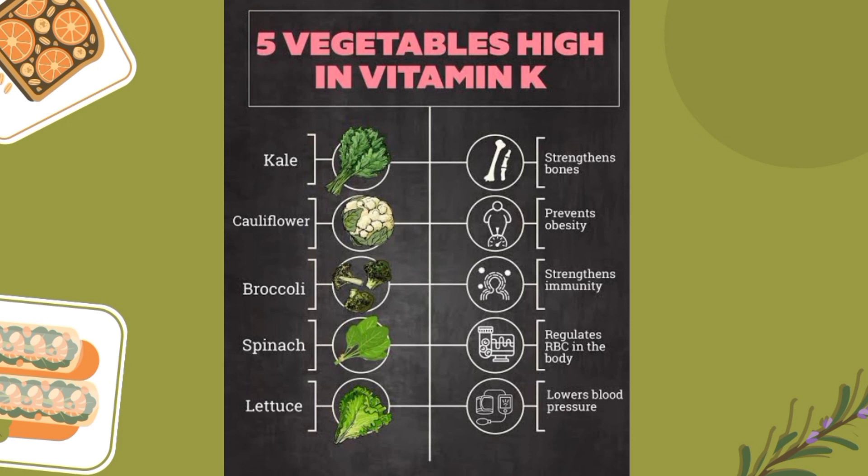Foods high in Vitamin K include kale, cauliflower, broccoli, and spinach. These all are good sources. They strengthen the bones, prevent obesity, strengthen the immunity, regulate the IVC in the body, and lower blood pressure.